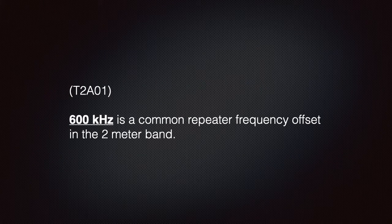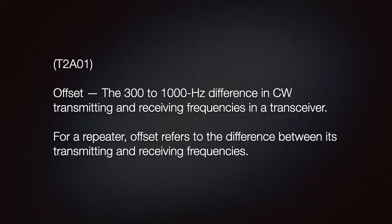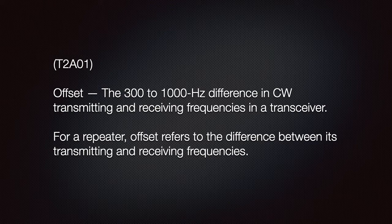We must know that 600 kilohertz is a common repeater frequency offset in the two meter band. For repeater offset, it refers to the difference between the transmitting and the receive frequencies.